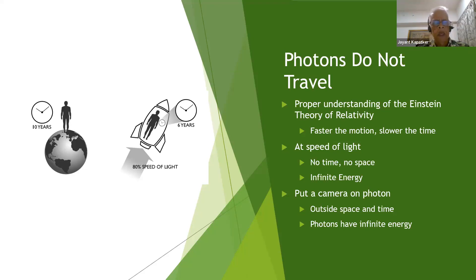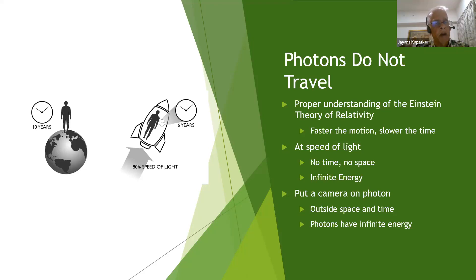Einstein had a famous thought experiment with two twin brothers. One is on Earth, the other sits in a rocket and travels at 80% the speed of light. The person on Earth feels that 10 years have passed, but the person in the rocket feels he has only traveled for six years because he is traveling at 80% the speed of light. If he goes at 99.99% the speed of light, he will only feel he has traveled for 50 days compared to 10 years on Earth. So there is a very interesting relation between time, motion, and speed. When you reach the speed of light, there is no time and no space. The only things we know that travel at the speed of light are photons.